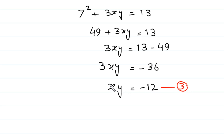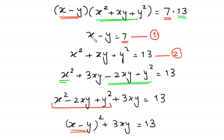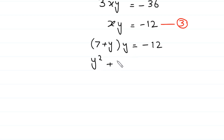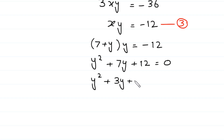From Equation 1, x minus y equals 7, which implies x equals 7 plus y. Substituting into Equation 3: (7 plus y) times y equals negative 12, giving y squared plus 7y plus 12 equals 0. We split 7y as 3y plus 4y: y squared plus 3y plus 4y plus 12 equals 0. Taking y common from the first two terms gives y(y plus 3).